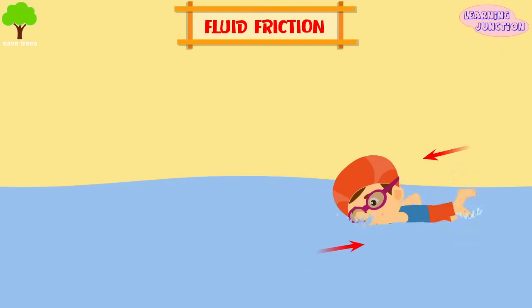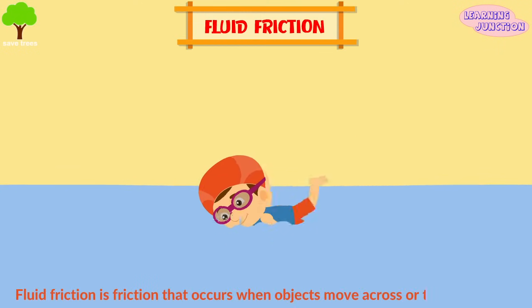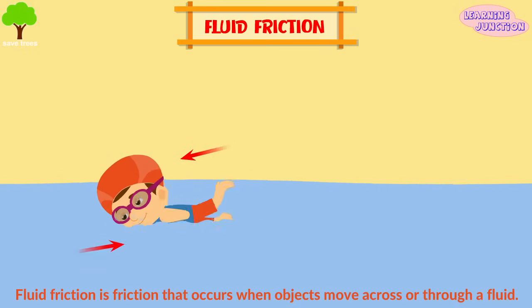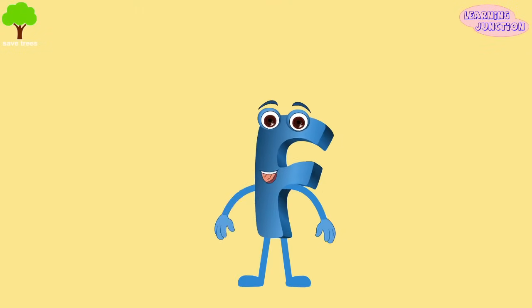Fluid friction is friction that occurs when objects move across or through a fluid. An example is swimming - the swimmer's body and the surface of the water. Although you normally hear about trying to eliminate or reduce friction, it actually has some important uses.